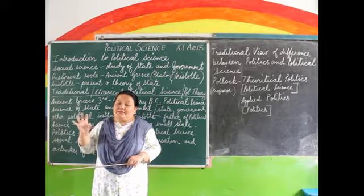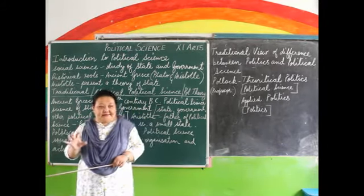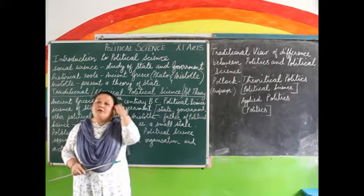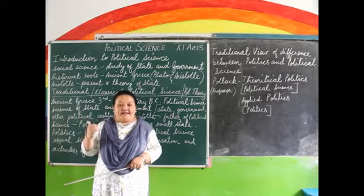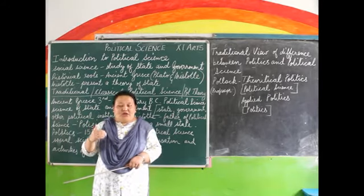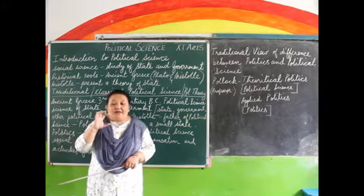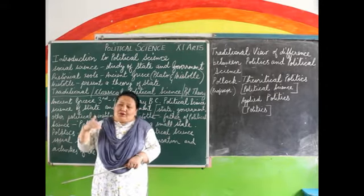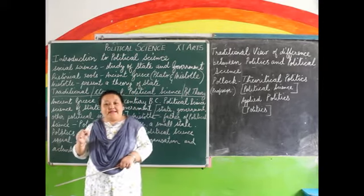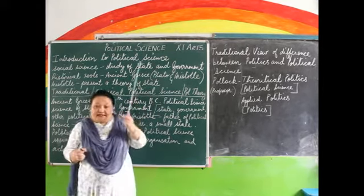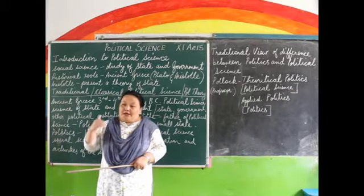This is just the background about what political science is. In your lower classes — especially in class 7, 8, 9, and 10 — you have studied civics. So more or less you have an idea about what is the government and how the government is supposed to function, and what are the other political institutions which are associated with the state. But here in political science, you are going to study it in detail.